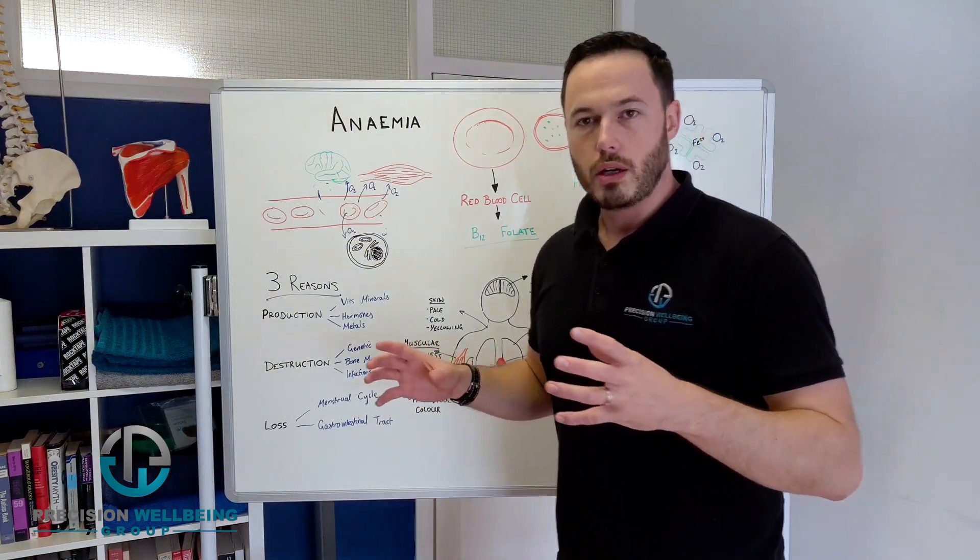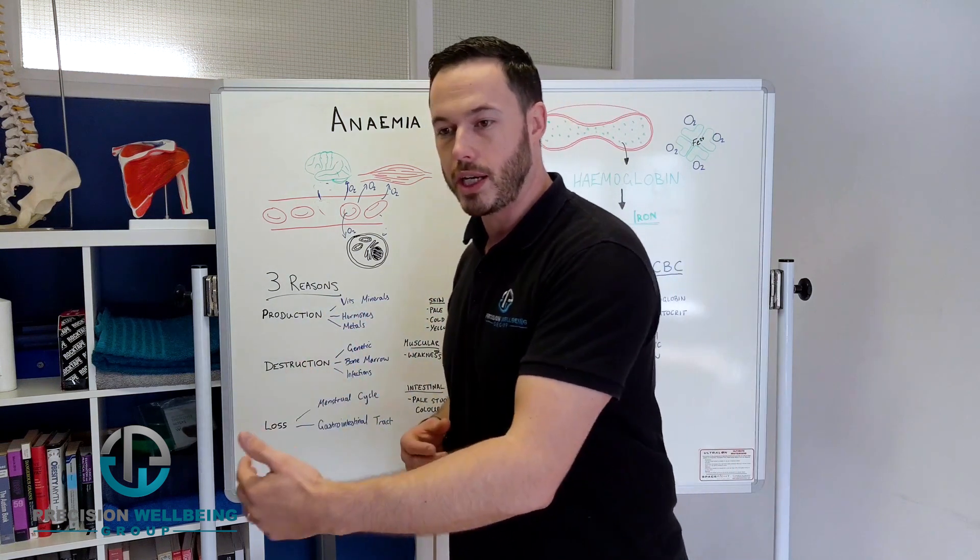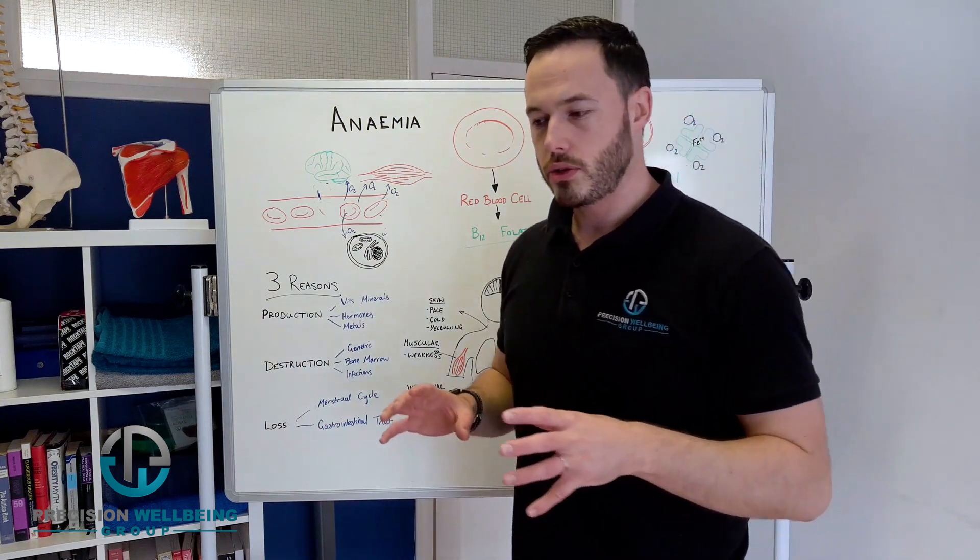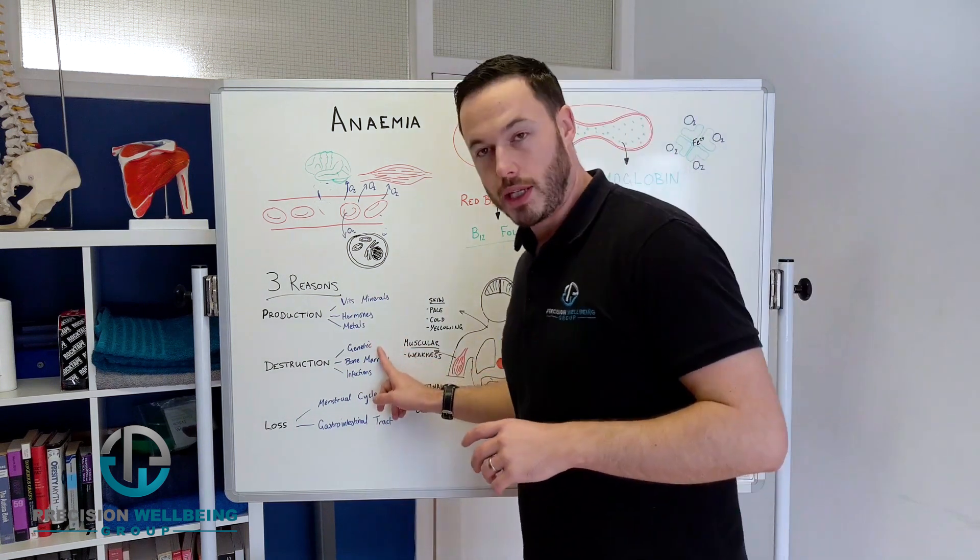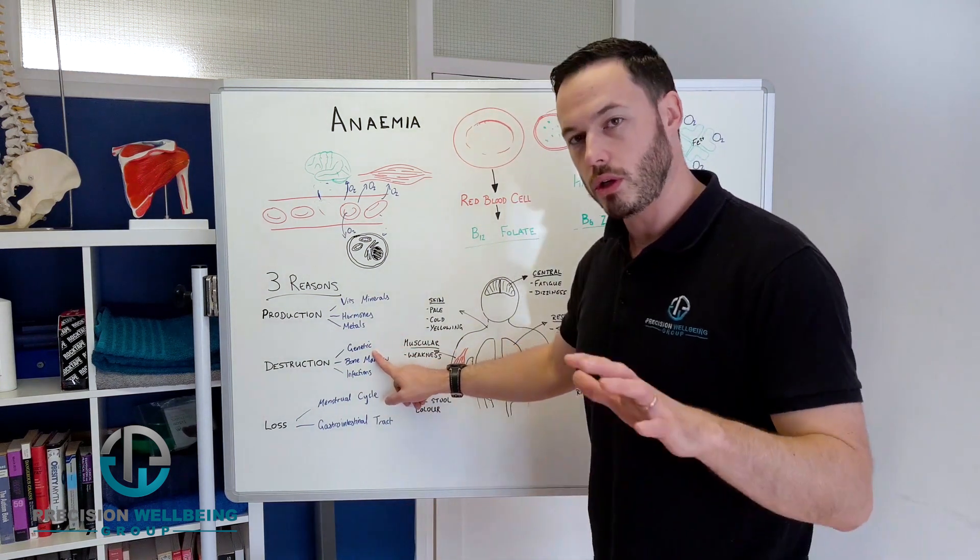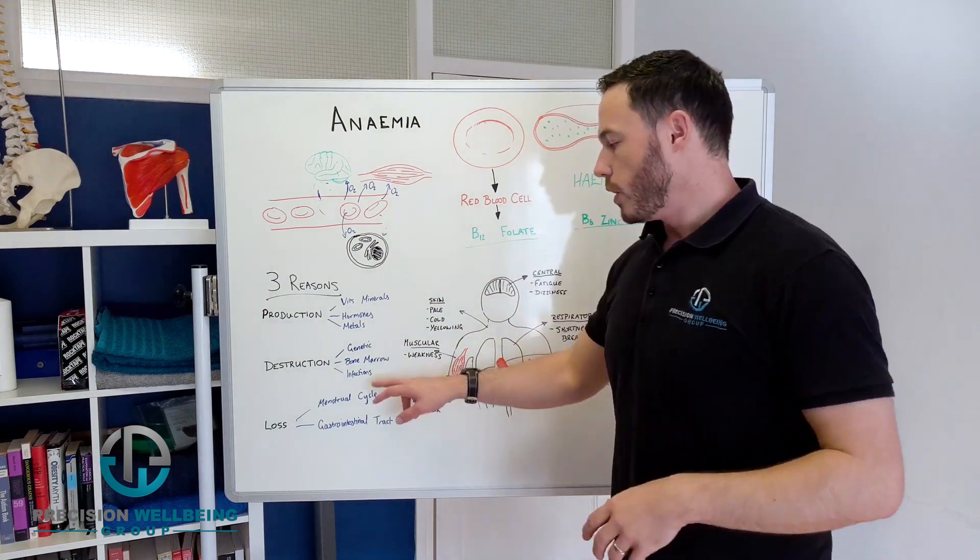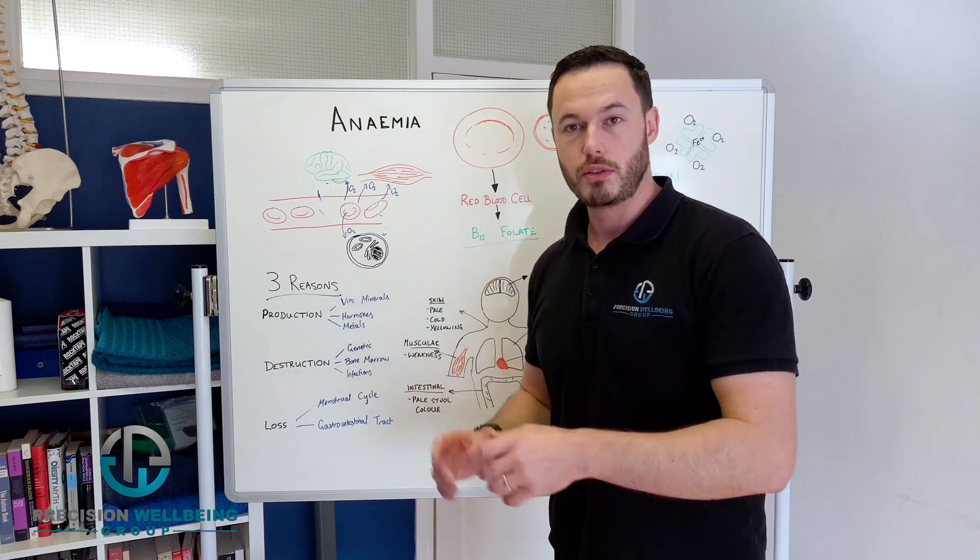But what if we are producing them fine but we're breaking them down quicker than they should be? Now this isn't quite so changeable, but the causes of that could be to do with genetic type of anemia which we can't do much about. It could be to do with the bone marrow, or it could be to do with chronic infection, inflammation, or chronic disease.